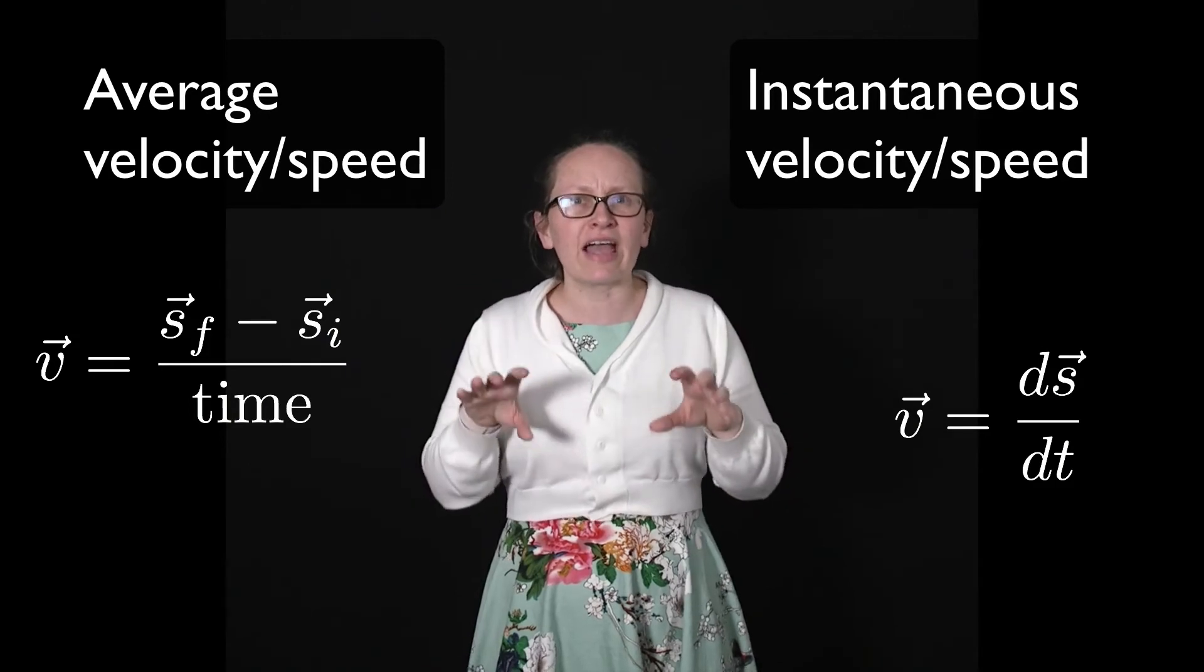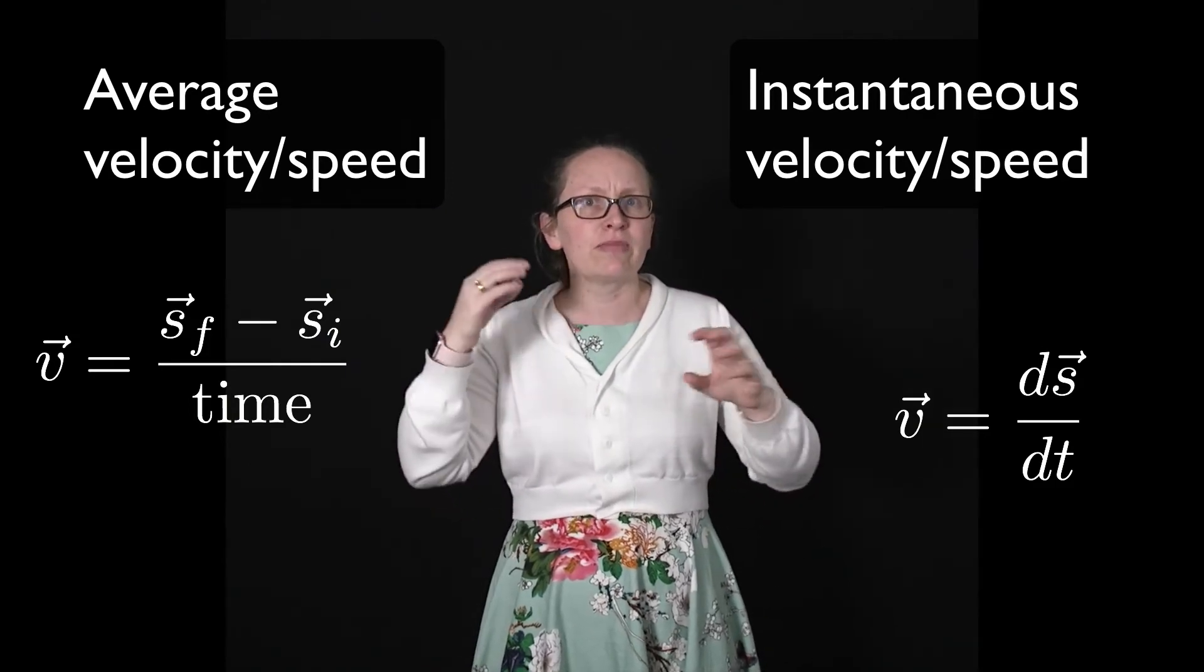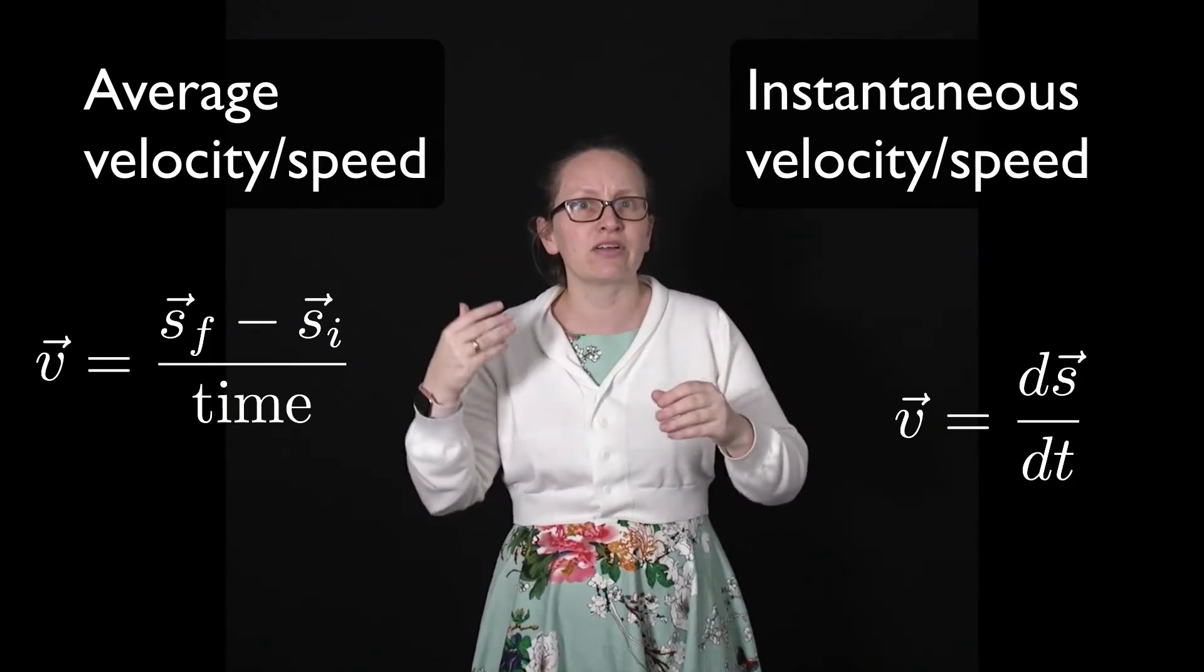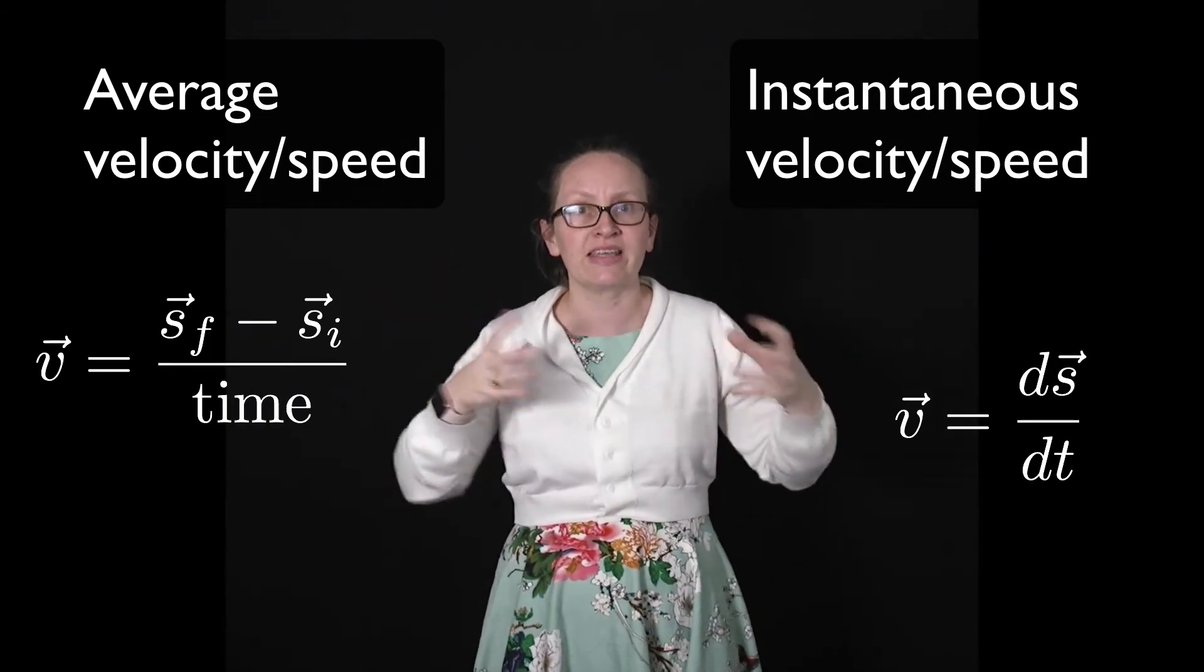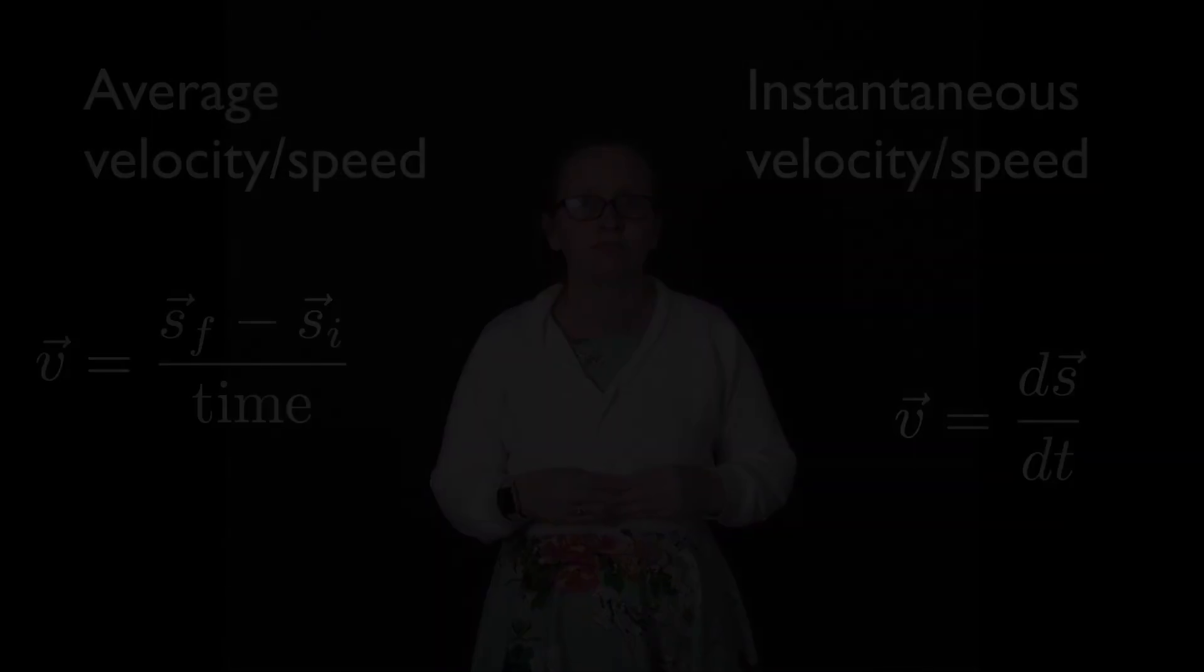So let's have a look at an example now, which makes it really clear what some of the similarities and differences are between these different quantities. So we will consider the problem: A car completes a 1.00km circuit of a racetrack in 1.0 minutes, ending at the starting line.